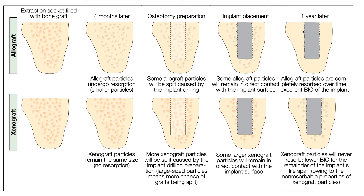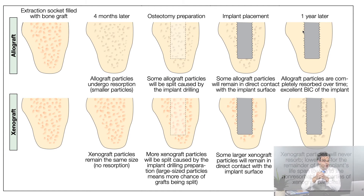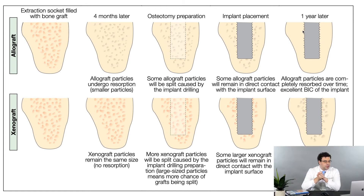Over time, those xenograft particles just never go away. The advantage with an allograft is that one year later, the allograft is completely resorbed and gone, and the implant is integrated. With xenografts, they're going to be there long term. And if you ever have any type of peri-implant issue such as peri-implantitis, those particles never go away — bacteria can grow on them.